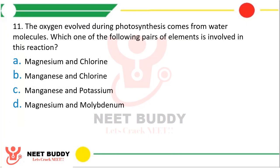Question 11. Oxygen evolved during photosynthesis comes from water molecules. Which one of the following pair of elements is involved in this conversion of water into oxygen? Options: Magnesium and chlorine, manganese and chlorine, manganese and potassium, or magnesium and molybdenum. The correct answer is option B — manganese and chlorine.